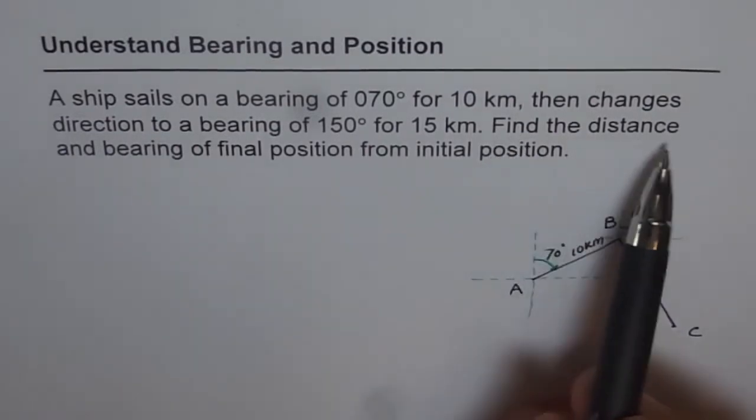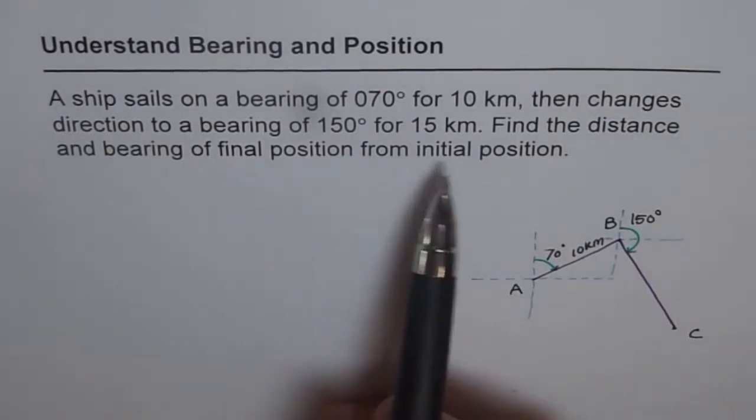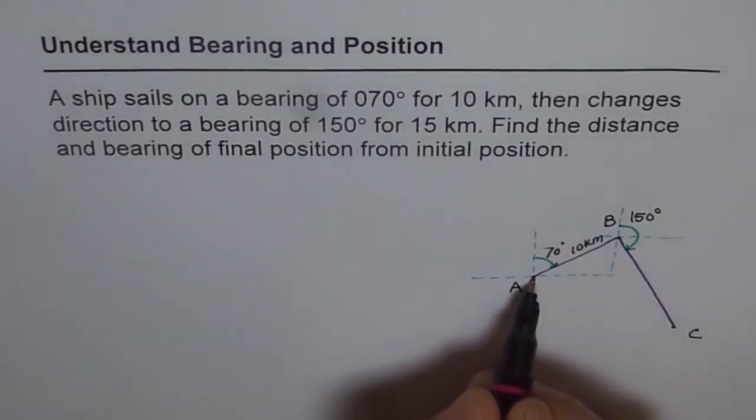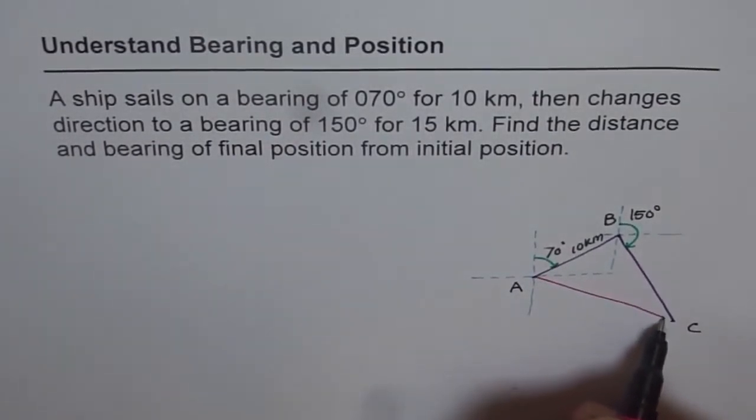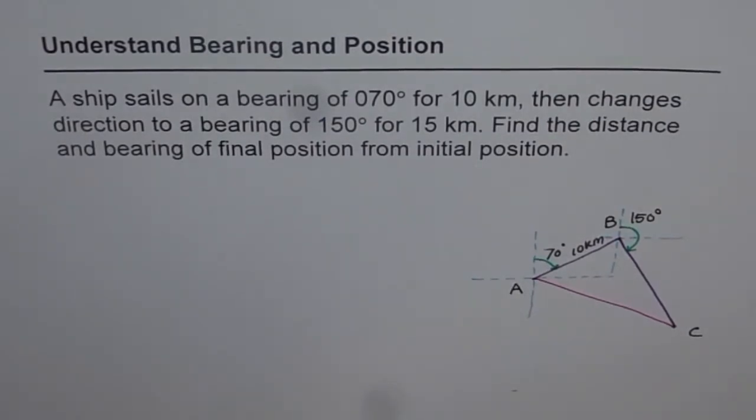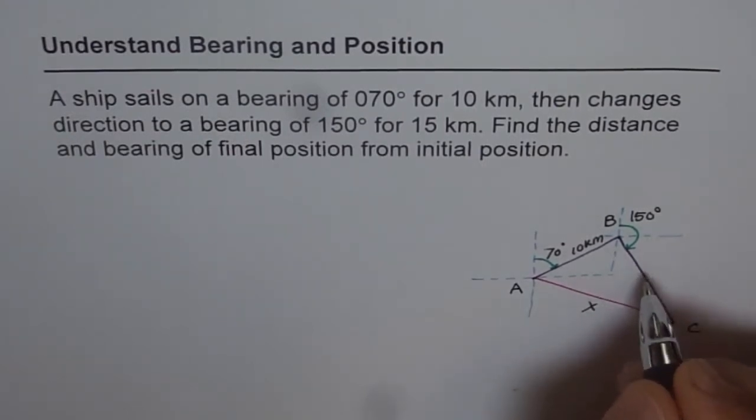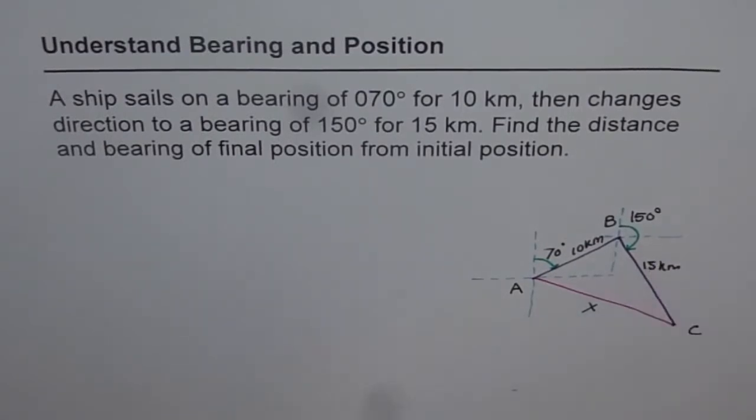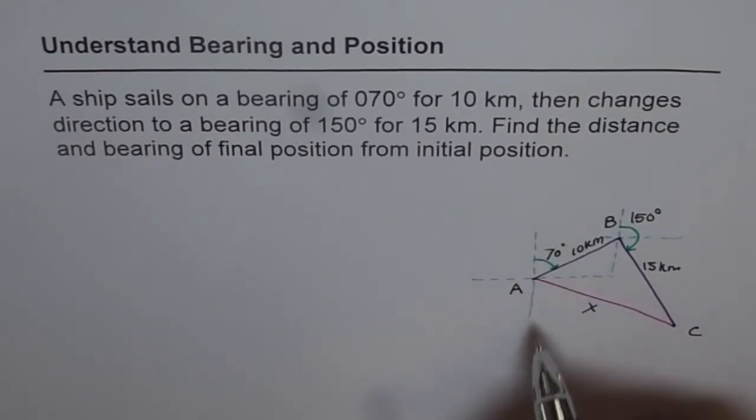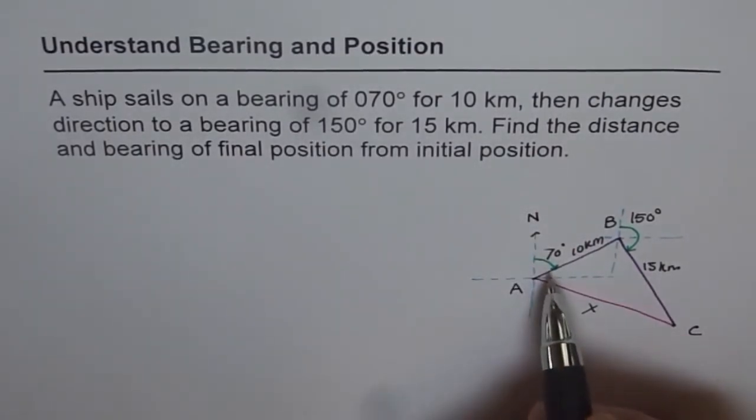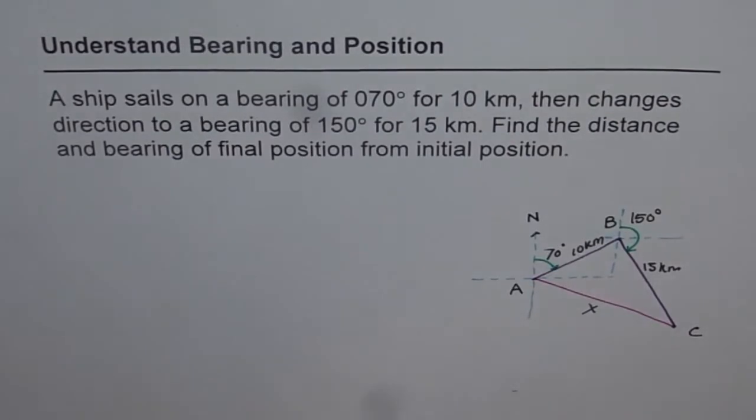Now we need to find the distance and bearing of final position from initial position. So what we need to find here is A to C. So let me join A and C. That is what we need to find, so let us call this as X. We know B to C is 15 kilometers for us. So this is the first thing you need to understand. Remember when we draw this axis, it is always pointing towards north and bearing angle is clockwise from north. So that's how we get these angles.